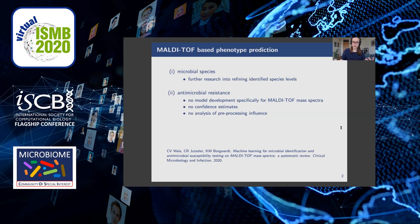As MALDI-TOF spectra capture the microbial composition, several research directions explore the prediction of microbial properties using machine learning. Even though species identification is highly accurate, further research is going into the distinction of some bacterial subspecies that cannot be fully determined from MALDI-TOF spectra yet. In this paper we focus on a second characteristic to be predicted, namely antimicrobial resistance. While some efforts have been made to apply existing machine learning methods for resistance prediction, no method has been specifically designed for MALDI-TOF mass spectrometry. None of the methods include confidence estimates, which we argue are critical for clinical applicability, and none go into a fine-grained analysis of how pre-processing of the spectra influences prediction results.